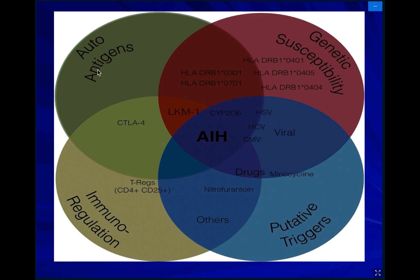The autoimmune disease of the liver is associated, as we mentioned, with other antibody and antibody disease. And usually there is a genetic susceptibility in those patients, which leads to the clinical manifestation of this disease.